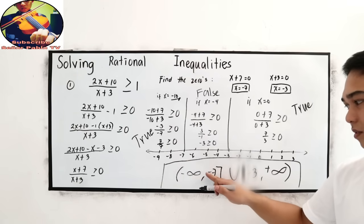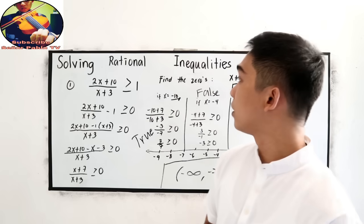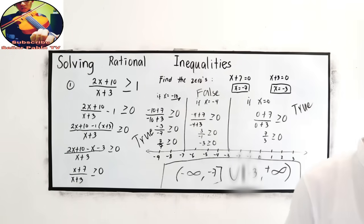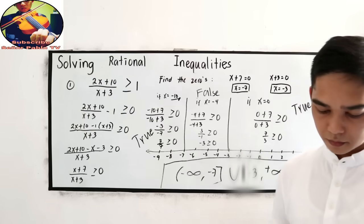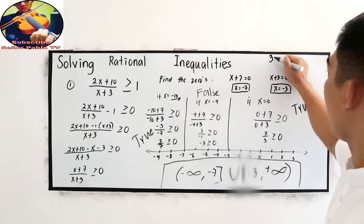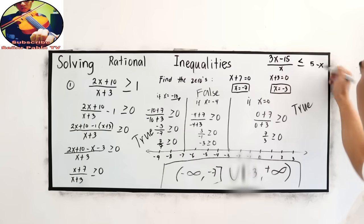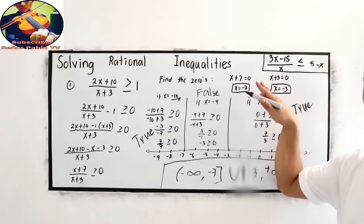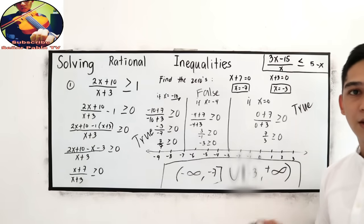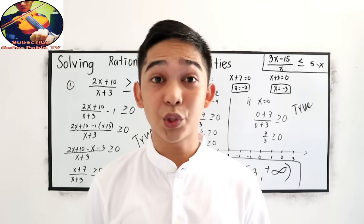The final answer is: negative infinity to negative 7, closed bracket, union, closed bracket negative 3 to positive infinity. That is how to solve rational inequalities. Now I want you to solve this practice problem: (3x − 15) / x ≤ 5 − x. Try to solve this. To check your work, I will attach the link in the description box.